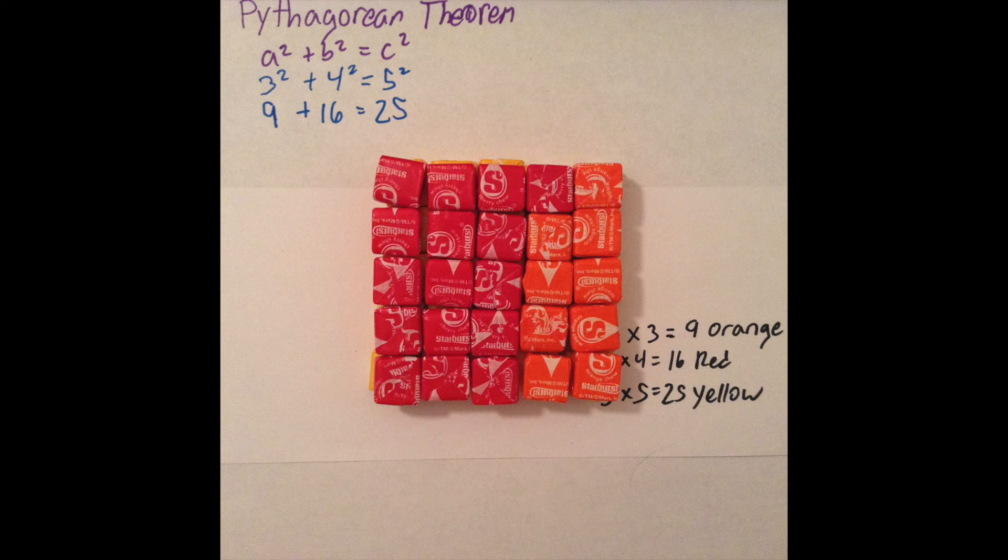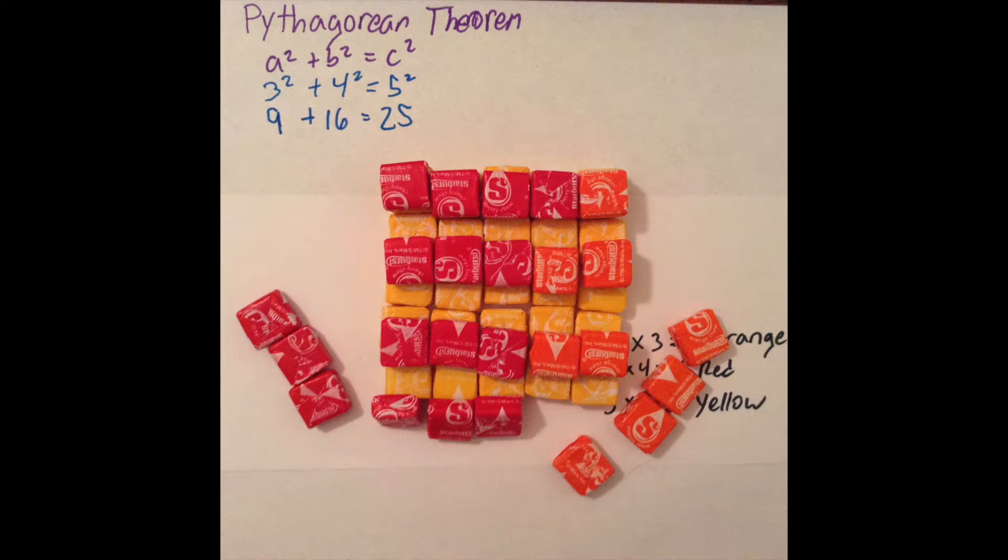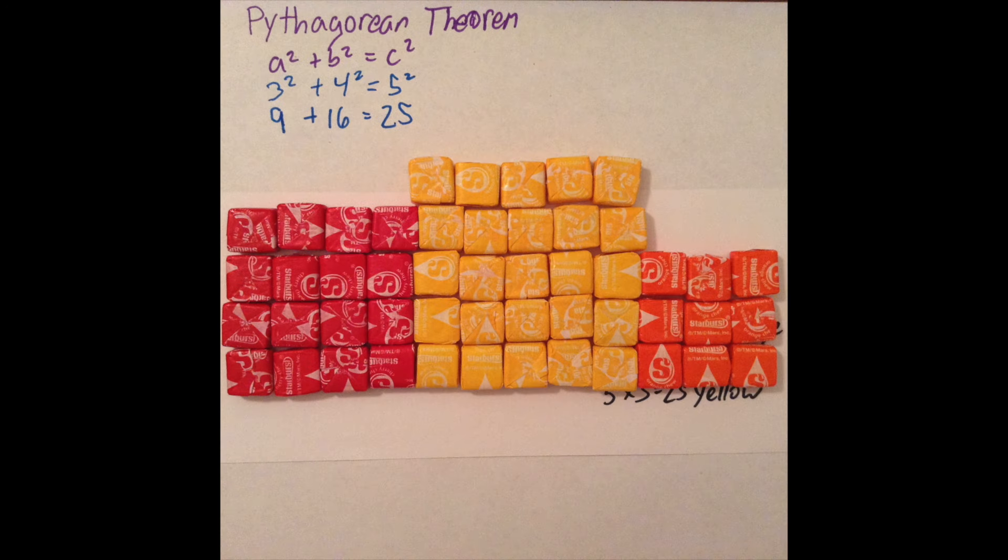What we did was we combined the areas of the red square and the orange square, or the red square plus the orange square equals the yellow square. a squared plus b squared equals c squared, which is our Pythagorean Theorem.